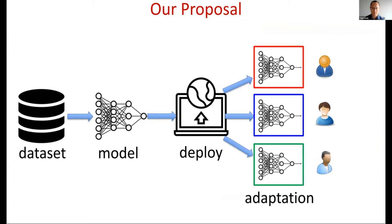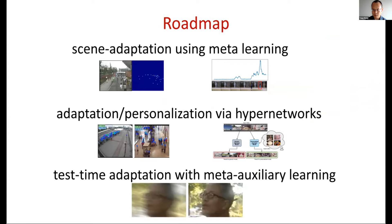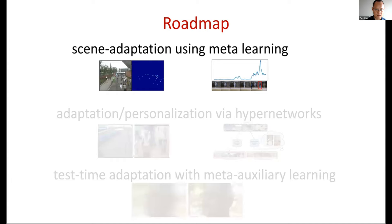This could represent different devices, scenarios, or domains. Typically, the offline training stage is done on the cloud or a powerful GPU server, and the adaptation is done on the user's edge device. In the rest of the talk, I'll present several different approaches we've worked on for different computer vision applications, though this idea is quite general and the techniques could also be used for applications beyond computer vision. Let's start with the first piece of work — I call it scene adaptation using meta-learning, using crowd counting as a running example.